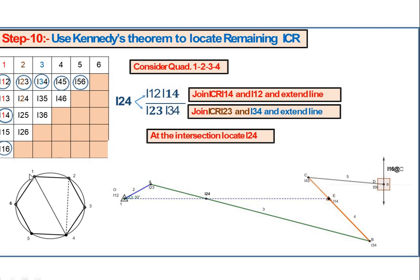The intersection of lines I12–I14 and I23–I34 gives the location of ICR I24. I12 is at O, I14 is at E, I23 is at A, and I34 is at B. Joining and extending these lines, they intersect to give I24.